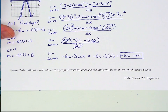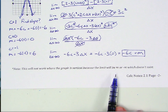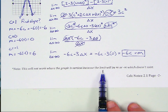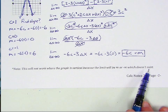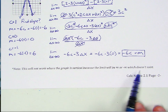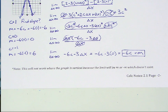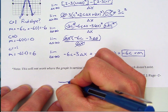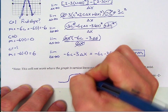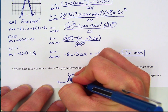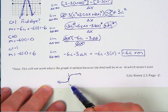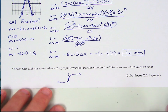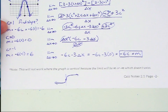One note: this will not work where the graph is vertical, because the limit you get is going to be infinity or negative infinity, which doesn't exist. So it's not going to work where we have a vertical graph — vertical lines have undefined slope.